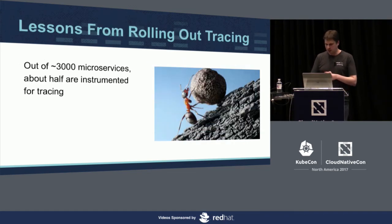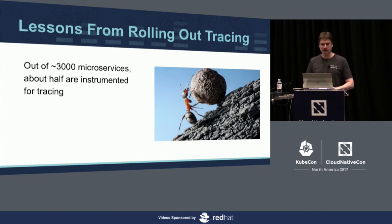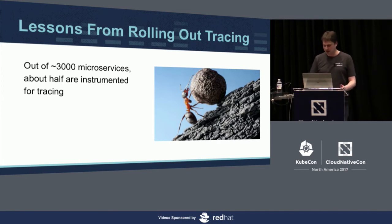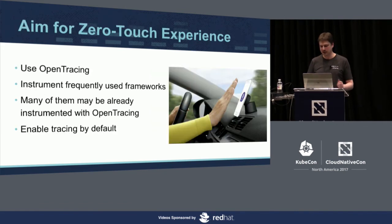What did we learn at Uber from doing this? We now have close to 3,000 microservices, and about half of them are instrumented for tracing. That 50% has been roughly constant for about a year and a half even as the number of microservices keeps growing — so it's tough. It doesn't help that we have four languages at Uber, making it even harder for my team to provide instrumentation for all languages and frameworks and write client libraries.